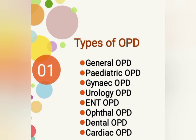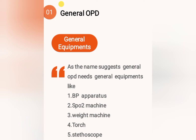One by one, we will see which equipments are essential. Number 1 is General OPD. As the name suggests, this OPD works for general complaints of patients — we can call it Physician OPD. For this OPD, we need general equipments like BP apparatus, Weight Machine, Examination Lamp or Torch, Sputum Machine, and Stethoscope. These equipments are basic ones useful for all types of OPDs, so these are the compulsory equipments for every OPD.